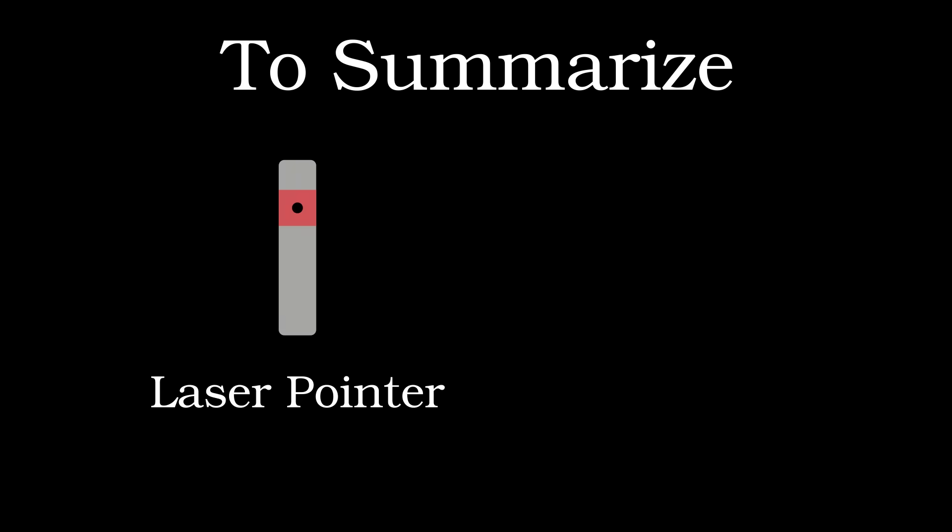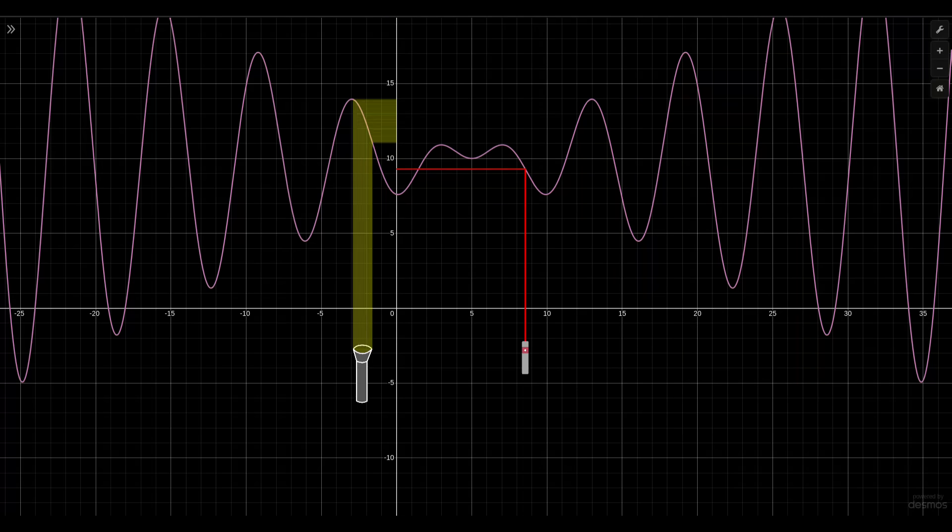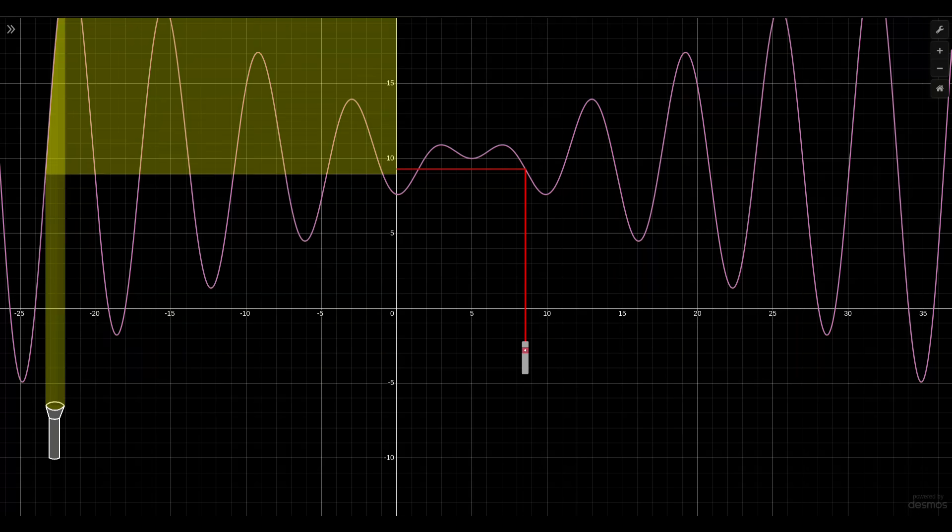So, to summarize, we've got the laser pointer and the flashlight. The laser pointer gives us the value of a function at a specific input, whereas the flashlight tells us the output, or image, for a whole interval of input values. And with these two tools in hand, I think it's time to take things to the limit.